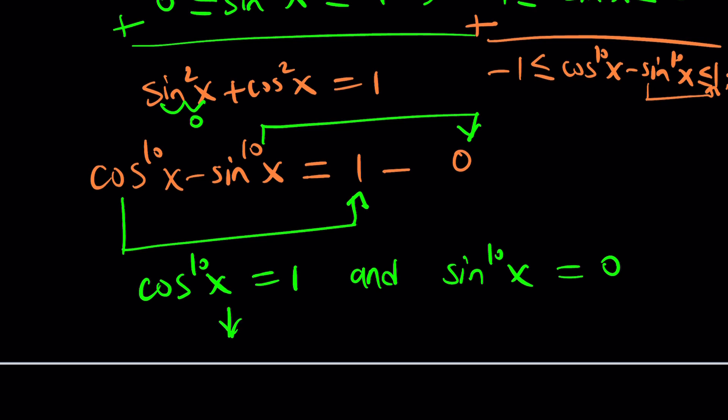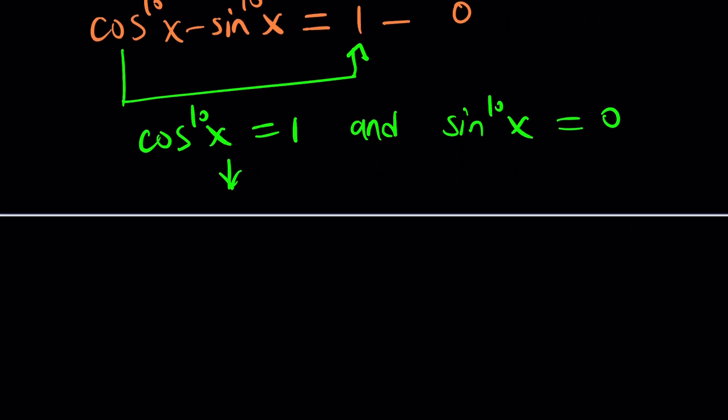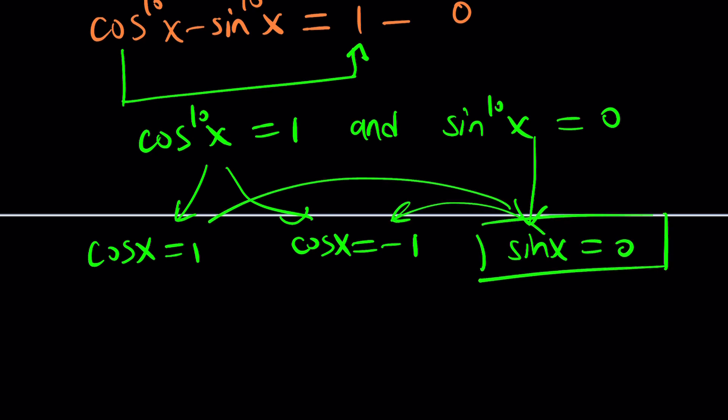Now, if cosine of x to the 10th power is equal to 1, then we can kind of split it into two solutions. Because this means cosine x can be 1 or negative 1. Great. But this one has only one consequence, sine x is equal to 0. And we know that this guy implies these. So if we just focus on solving this, we should be in good shape.